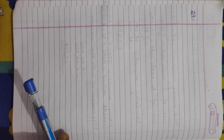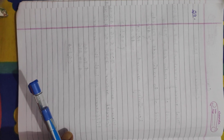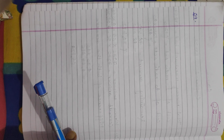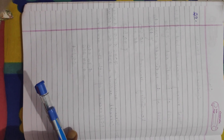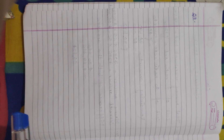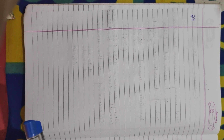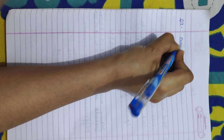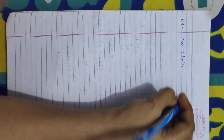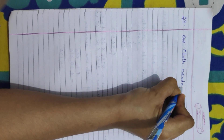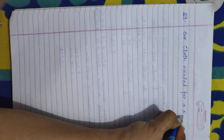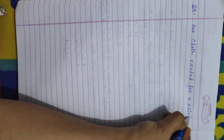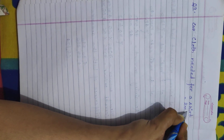Now let's come to question number 9. To stitch a shirt, 2 meters 15 centimeters of cloth is needed. Out of 40 meters of cloth, how many shirts can be stitched and how much cloth will remain? The cloth needed for one shirt is 2 meters 15 centimeters.